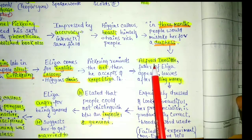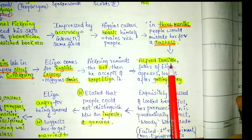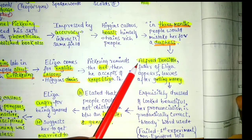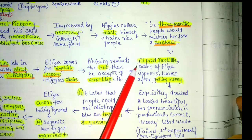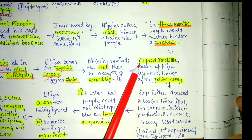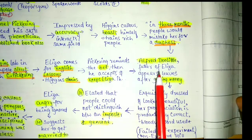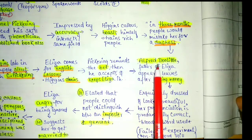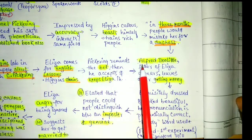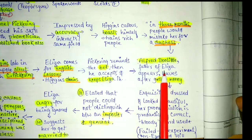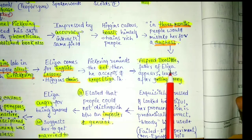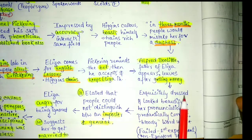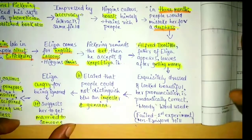At that point another person comes to Higgins's house — Alfred Doolittle, Eliza's father. He came as if he were a caring father, but he was actually a drunkard who came for money. By showing false care, he expected to receive some money, and indeed Higgins showered him with a few dollars and he went away. Higgins clarified that they had kept Eliza for a genuine purpose, not for any wrongdoing.